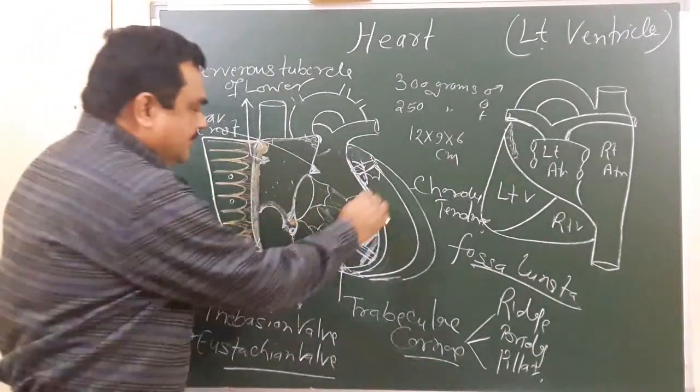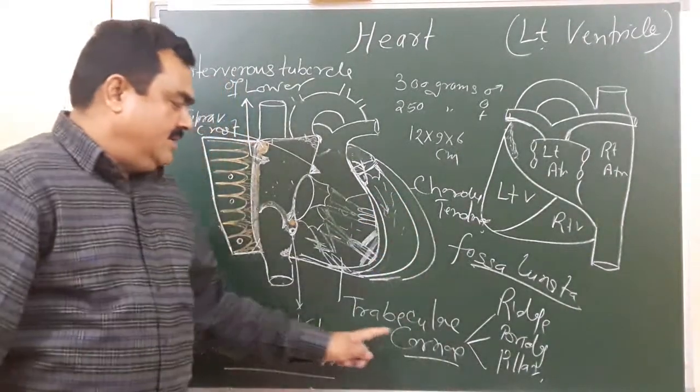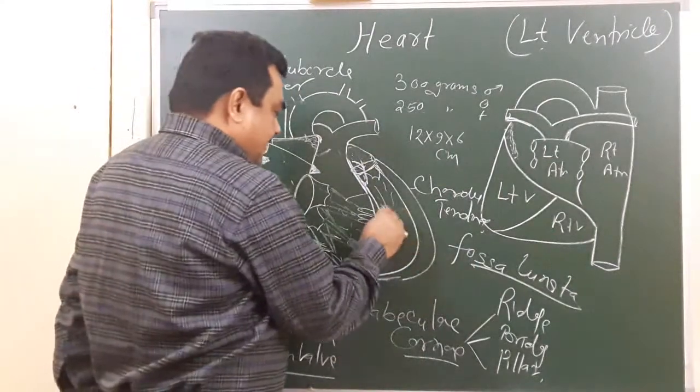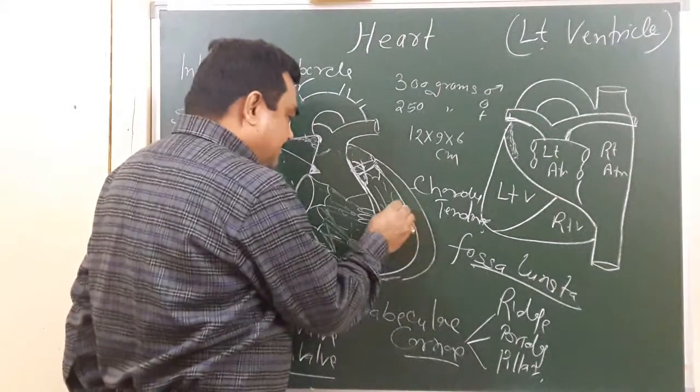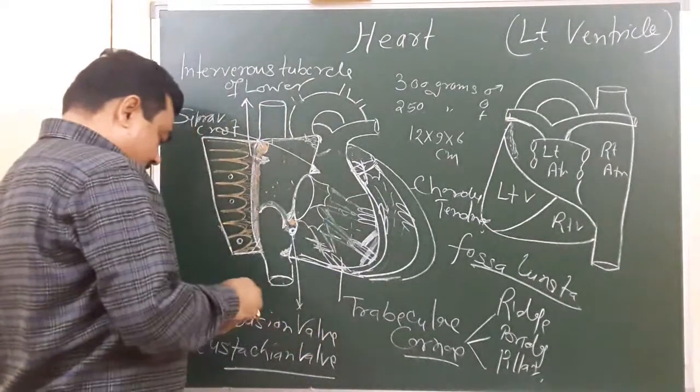has an inflowing part. This inflowing part is rough; the roughness is due to trabeculae carneae. Here also, these ridges are present—these pillars present in the wall like this—and from